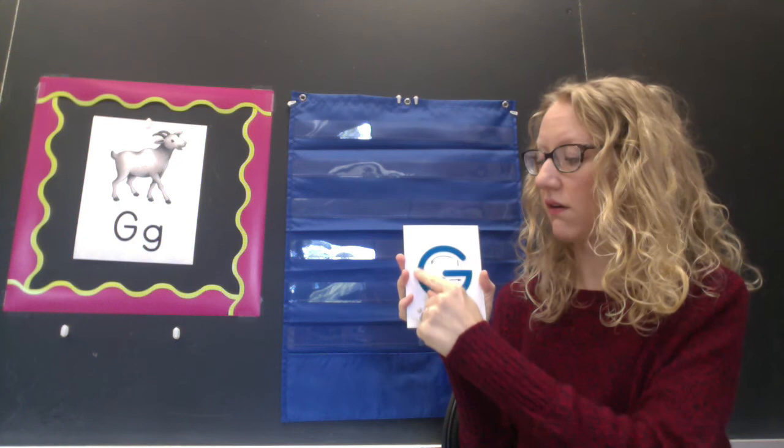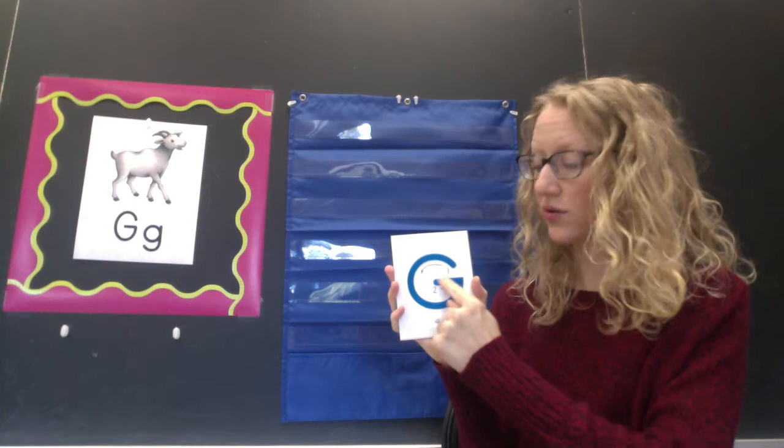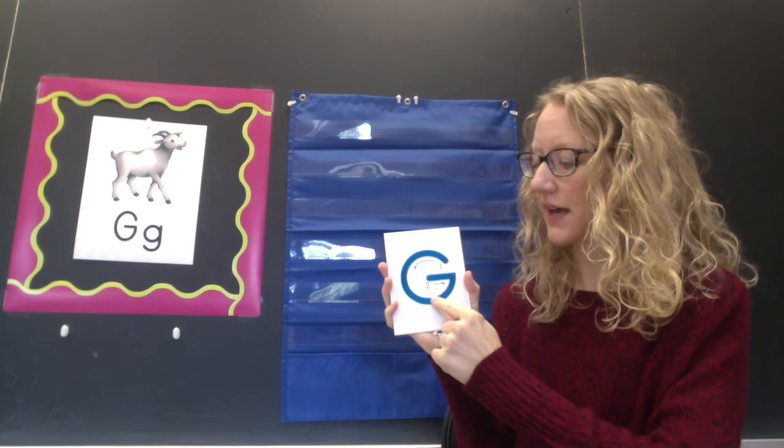Now, to make a capital G, it looks like a C, or almost even like an O, but it doesn't close up the whole way. You start here, and you curve around and back, all the way to the bottom. Keep curving around, but before you get back up to the start, you make a short line in. Watch one more time. Curve back and around, all the way down, back up, but stop, and go in.